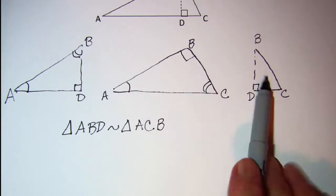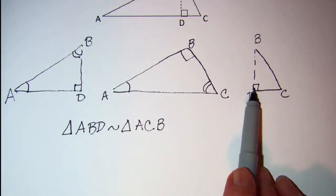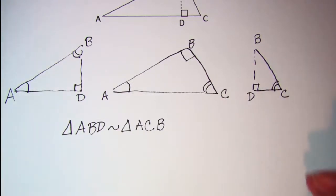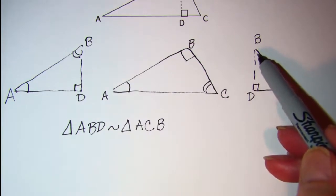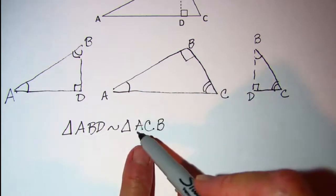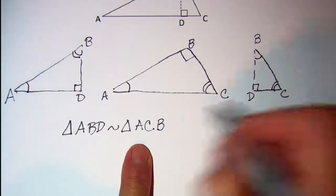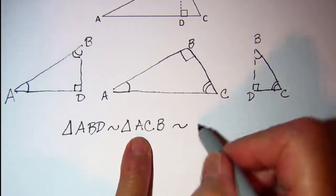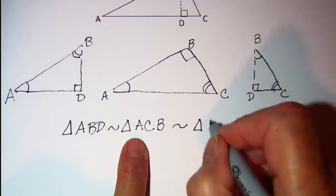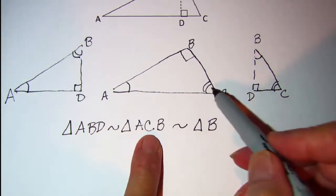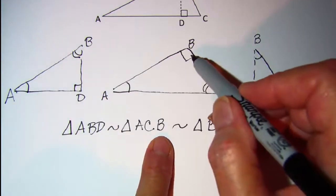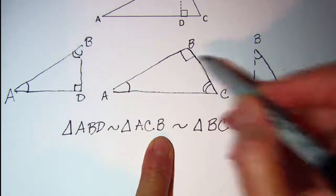Now looking at the other pair, I have right angle B and right angle D. Angle C is the angle they share, so I'll double arc angle C. That leaves angle B matching up with angle A. Writing this statement: matching up the single arc angle A, then angle B, then the double arc angle C — corresponding to angle B, then angle D, then angle C. So the right angle D corresponds to angle B.